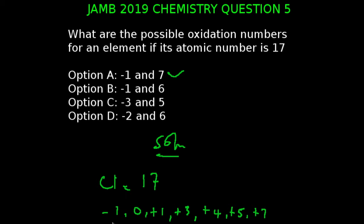An easy way to go about this is to first identify the element. An element with atomic number 17 is chlorine, and its oxidation number, depending on the substance containing the chlorine, will be -1, 0, +1, +3, +4, +5, and +7.